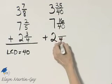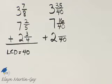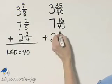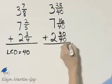And then our last mixed number, 3 fourths. What do I multiply 4 by in order to have 40? I multiply it by 10. So, remember the 10. 3 times 10 is 30.